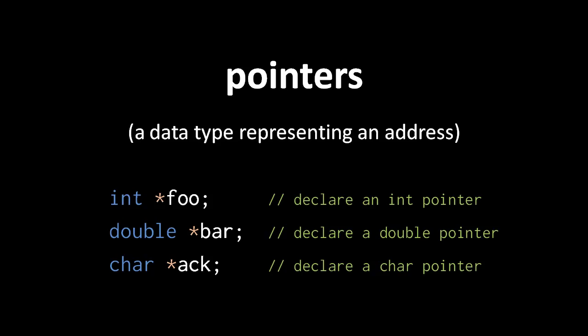There isn't just one single data type called pointer; instead there is a pointer type for every other type in the language — e.g. an int pointer type, a double pointer type, and a char pointer type. The idea is that int pointer values represent addresses of int values, double pointer values represent addresses of double values, char pointer values represent addresses of char values, and so forth.